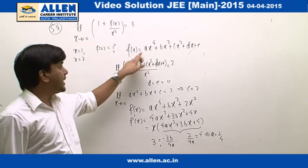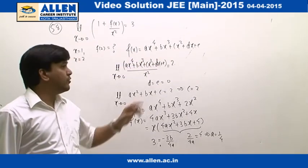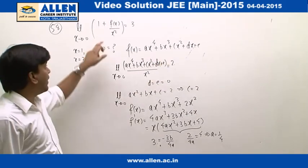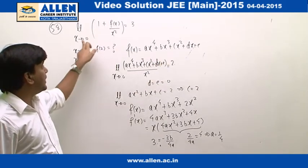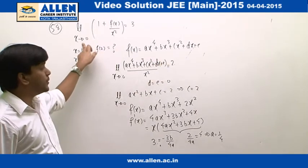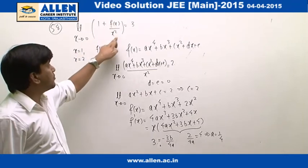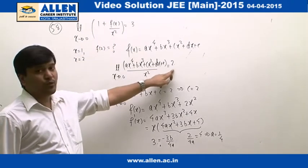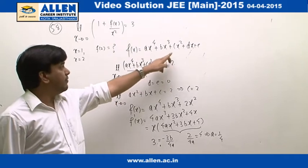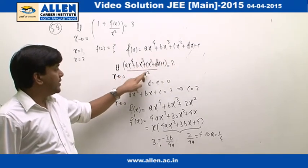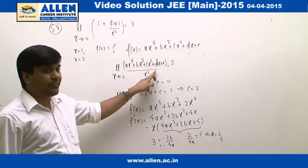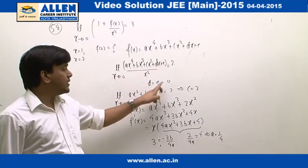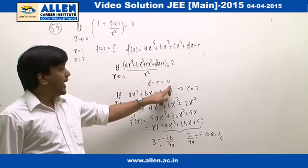We take f(x) as ax⁴ + bx³ + cx² + dx + e. After simplifying the limit as x approaches 0 of f(x)/x² equals 3 minus 1, which is 2, we can see that this limit will exist only when the values of d and e are 0.